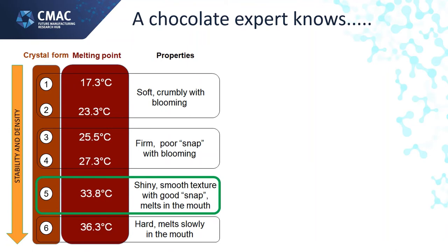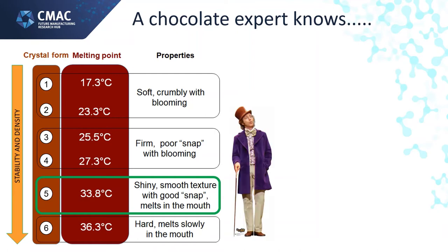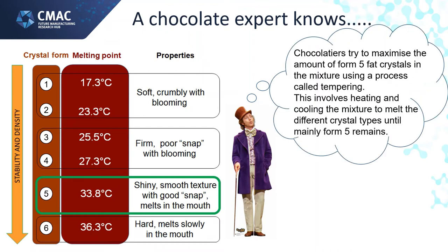Chocolate has six polymorphs, and these six polymorphs have different properties. The one we want is Form 5, which has a shiny, smooth texture, good snap, and melts in the mouth — all the properties you'd want from your bar of chocolate. Chocolatiers try to maximize the amount of Form 5 fat crystals in the mixture using a process called tempering, which involves heating and cooling the mixture to melt the different crystal types until mainly Form 5 remains.